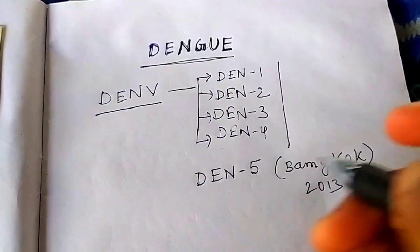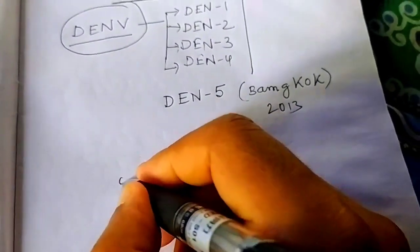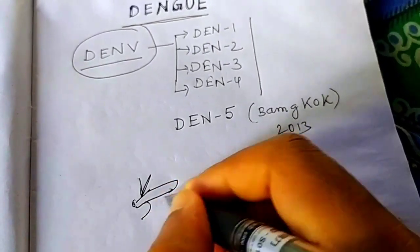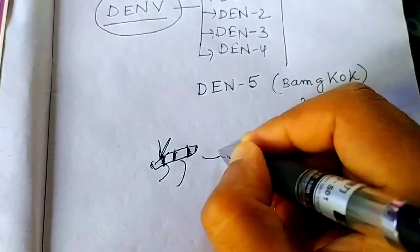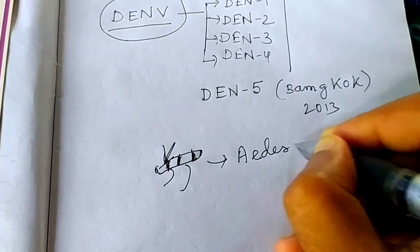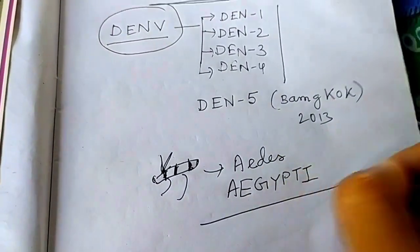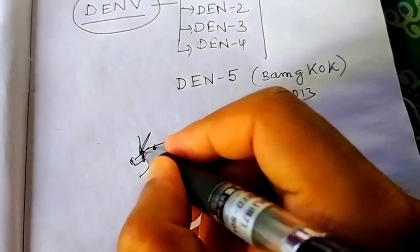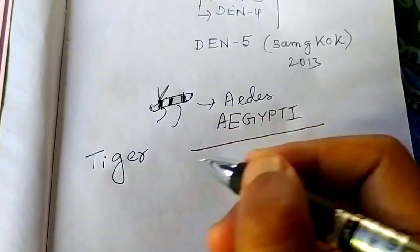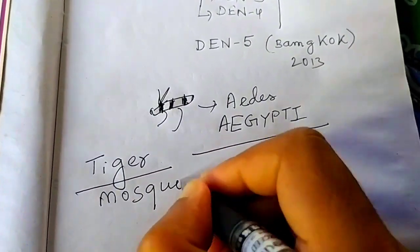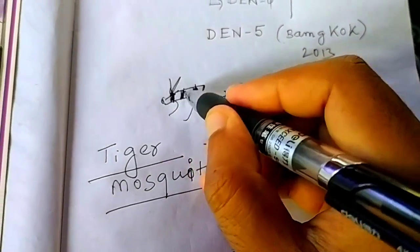This Dengue Virus, DENV, is carried by a mosquito. I am drawing a mosquito. This mosquito has stripes. So this is actually the Aedes mosquito, Aedes aegypti. This mosquito has stripes and that is why this mosquito is known as Tiger Mosquito, because they have stripes on their body.